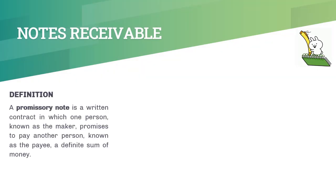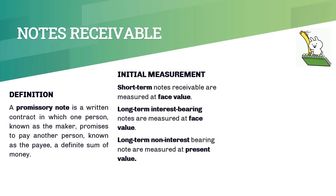Notes receivable are evidenced by promissory notes written by the maker and given to the payee. Short-term notes receivable are initially recorded at face value. Interest-bearing notes receivable are initially measured at face value as well. Only notes receivable that are non-interest-bearing are initially recognized at present value.